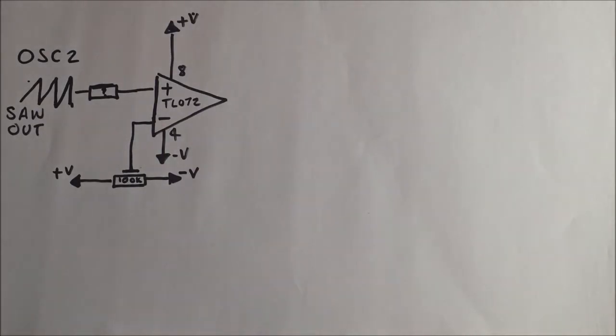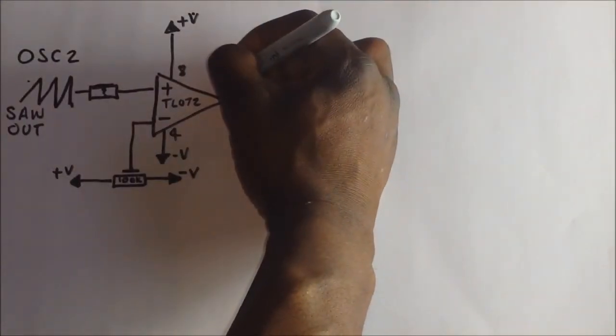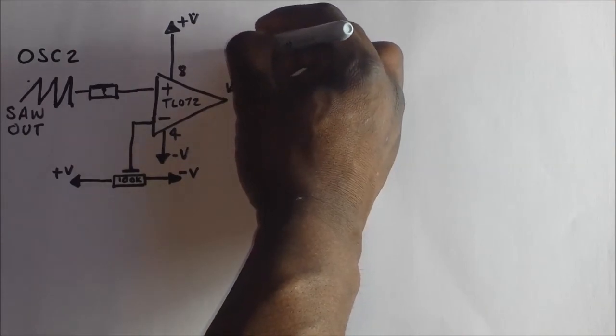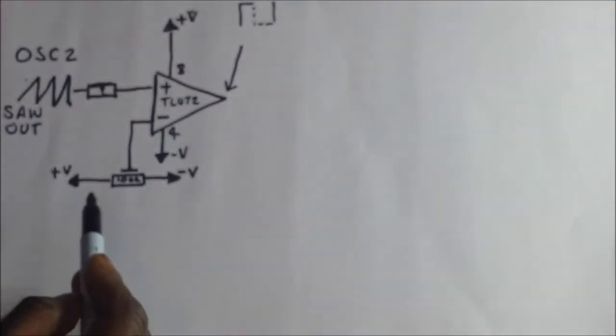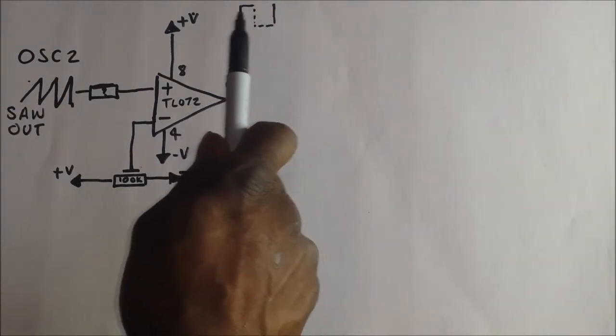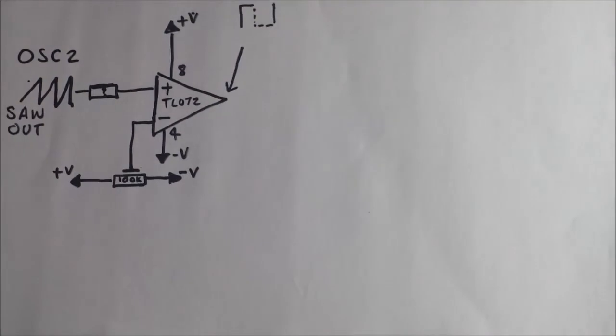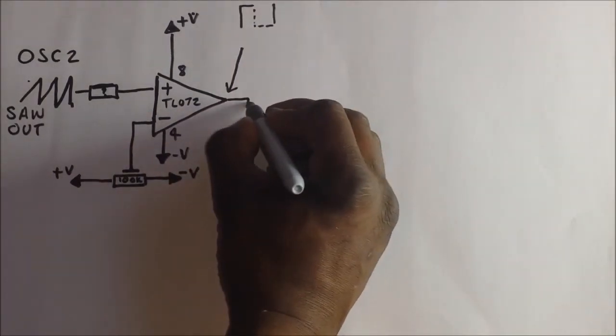And so what will happen then is we will have from this very point here, our output. We will have a square or should I say a variable pulse. Why I say it's a variable pulse is because we've got the voltage divider on it. As we turn that voltage divider we can vary the width of that pulse and it's basically like how pulse width modulation works. Now this is not a circuit that I copied from anywhere, this is a circuit I kind of just put together myself as an experimentation and voila it works.